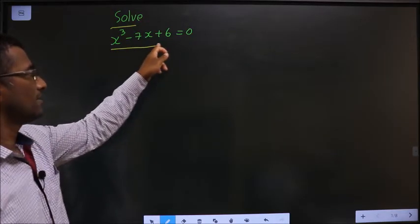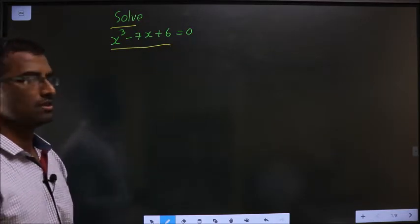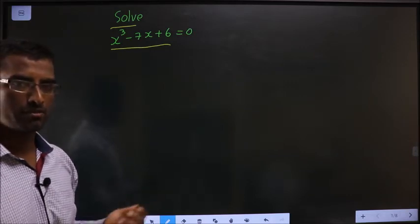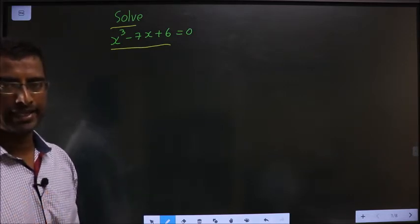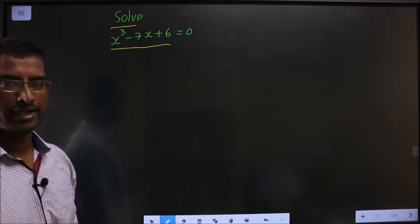Solve x cube minus 7x plus 6 equal to 0. They told us to solve this means we need to find the value of x. Now how do we find it?